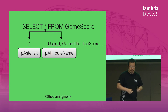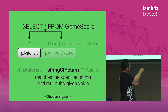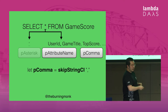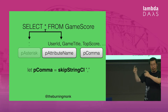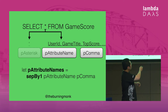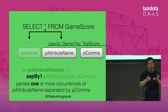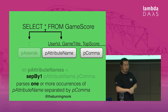For the star, I can use a stringCIReturn parser, which matches a given string like skipStringCI but actually returns a value I provide — in this case it returns the Asterisk case. For the comma-separated list of attribute names, I first need a parser for individual attribute names, which has the same requirements as table name — characters must be letters or digits. I also need a parser for the comma using skipStringCI, and then I combine them using the sepBy1 parser combinator, which parses one or more attribute names separated by comma.